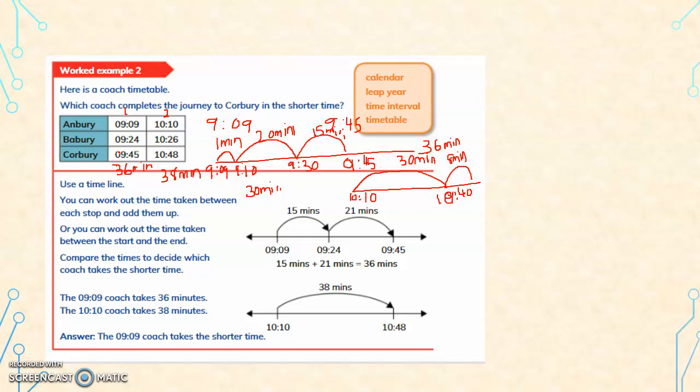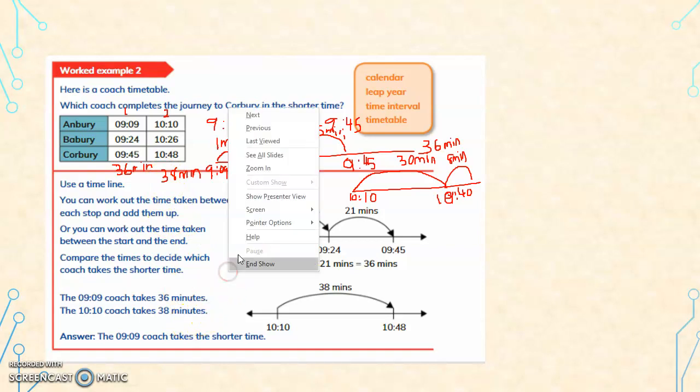First, read the question. Understand what we have to find. Which coach completes the journey to Corbary in the shorter time? Find the time taken by coach 1, find the time taken by coach 2, whichever takes shorter time. You can work on a timeline. Round to the nearest 10 or multiples. Then counting by 10 is much easier. Round to nearest 10. So I hope this is clear. Now, moving forward.